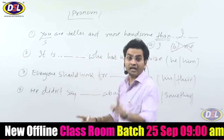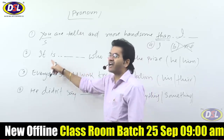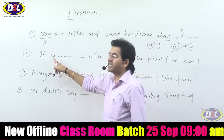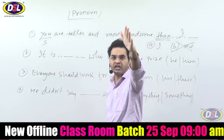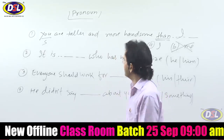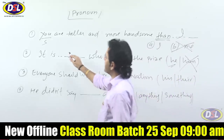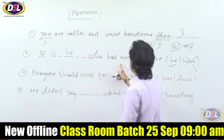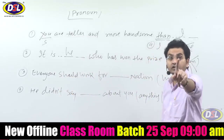Another point: after 'it is,' we always use the subjective case. People say 'it's me,' but the correct form is 'it is he,' not 'him.' For example: 'It is he who has won the prize' — use 'he,' not 'him.' We have made a detailed video on this on YouTube; check it out.